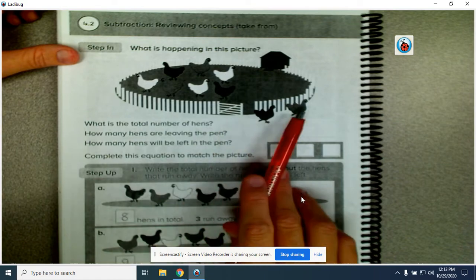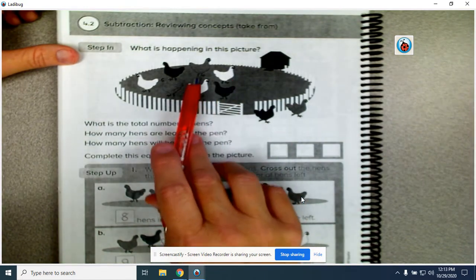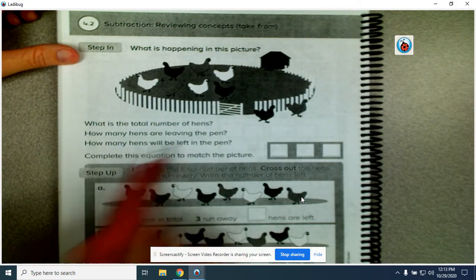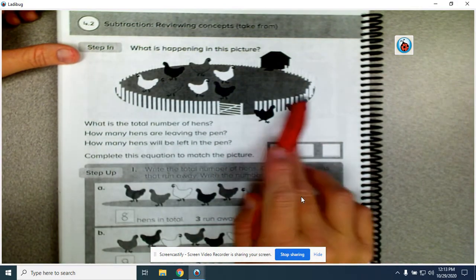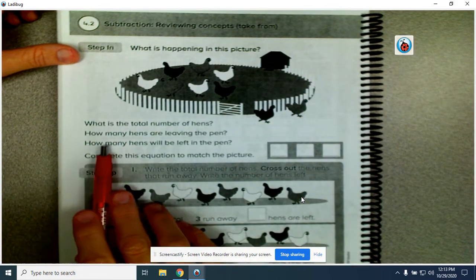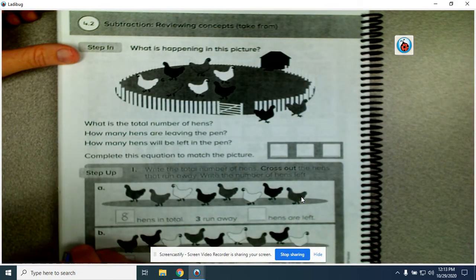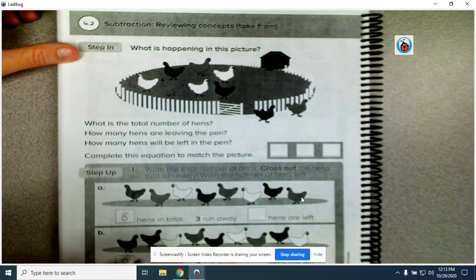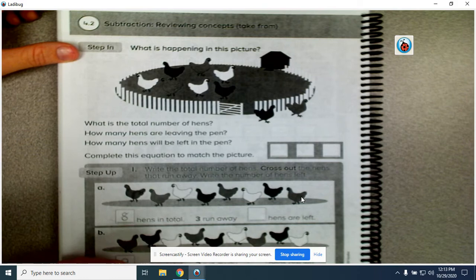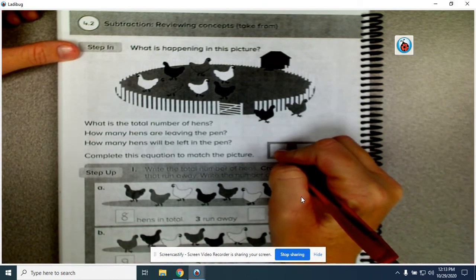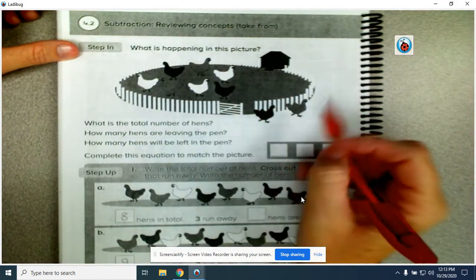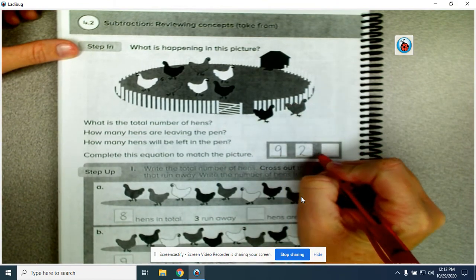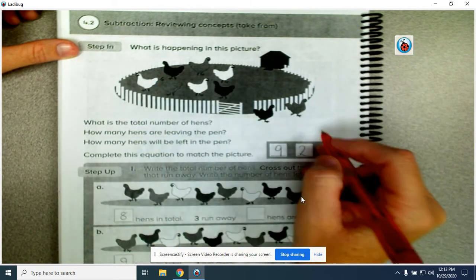What's the total number of hens? One, two, three, four, five, six, seven, eight, nine. There are nine hens total. How many hens are leaving the pen? There are two hens leaving the pen. How many hens will be left in the pen? How many are still here? One, two, three, four, five, six, seven. So we're going to complete the equation to match the picture. Nine, the total is nine, minus the two that walked away equals seven hens left. Nine minus two equals seven.